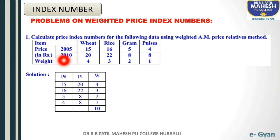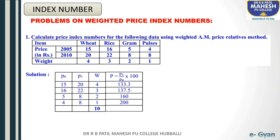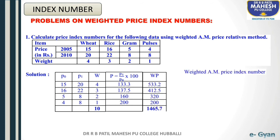Price of 2010 means current year price. The base year prices P0 are: 15, 16, 5, 4. The current year prices P1 are: 20, 22, 8, 8. The weights are: 4, 3, 2, 1. The formula of weighted arithmetic mean price index number is: P01 equals summation WP divided by summation W. To find the weighted arithmetic mean, we first need capital P — the price relative — then multiply the price relative by W (weights).